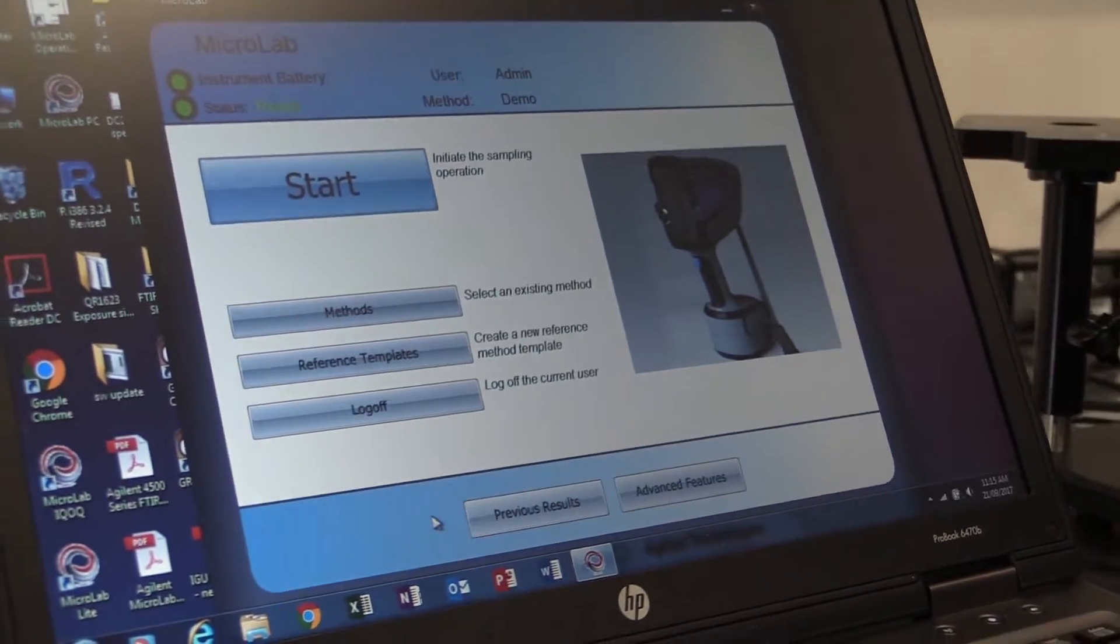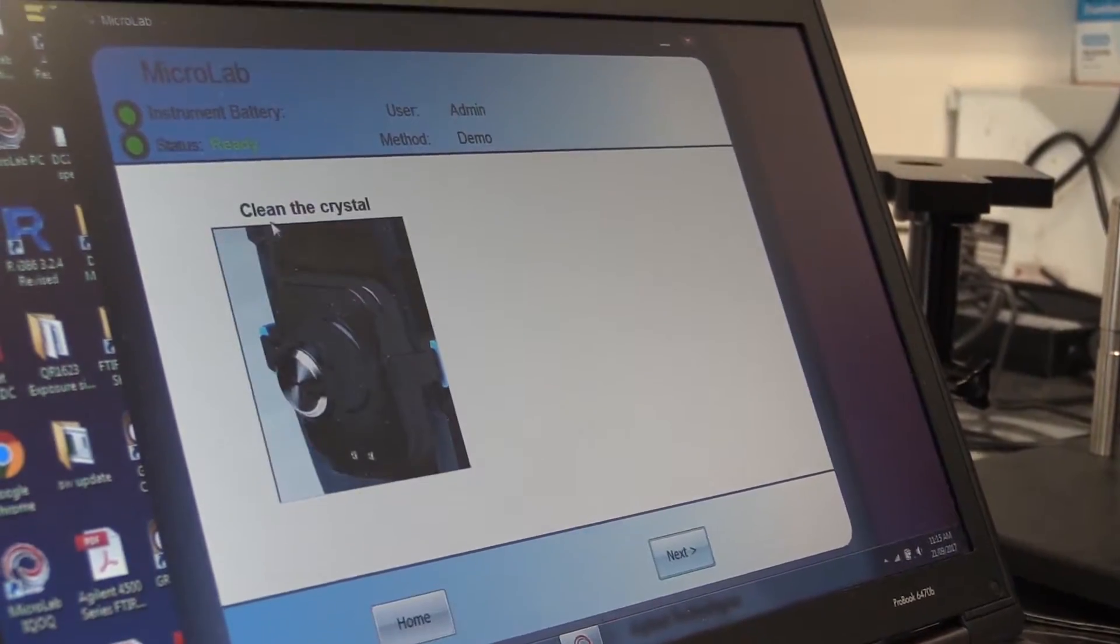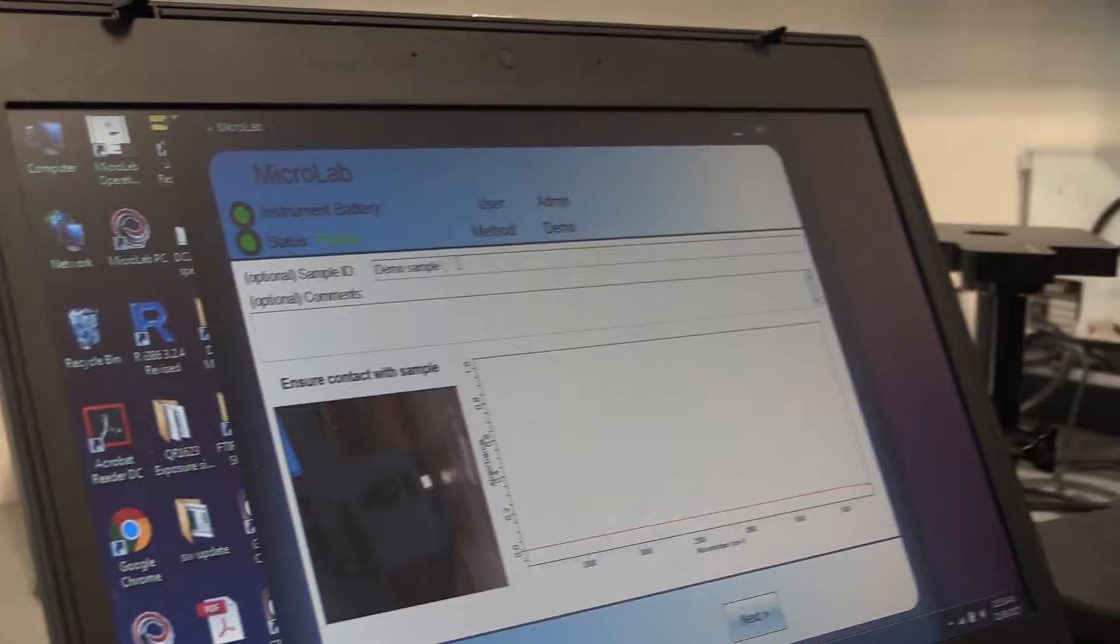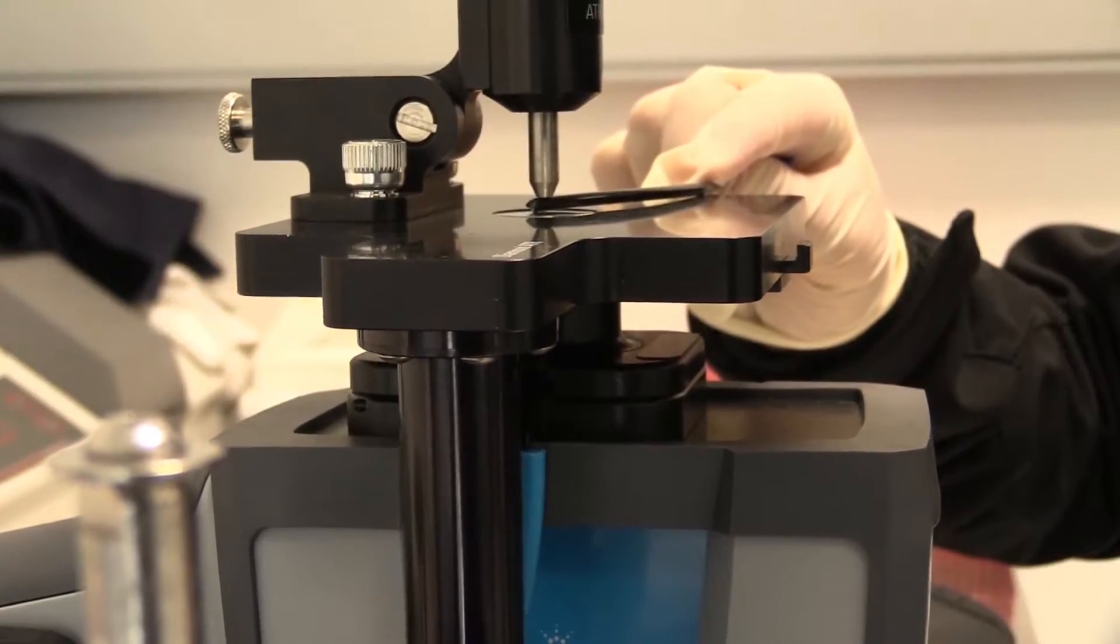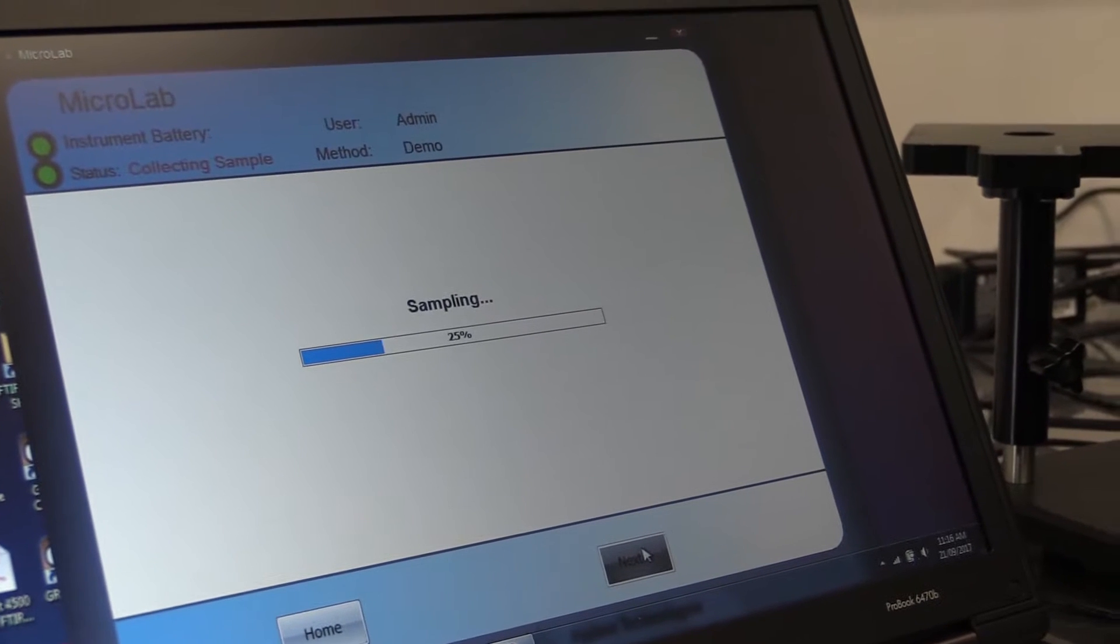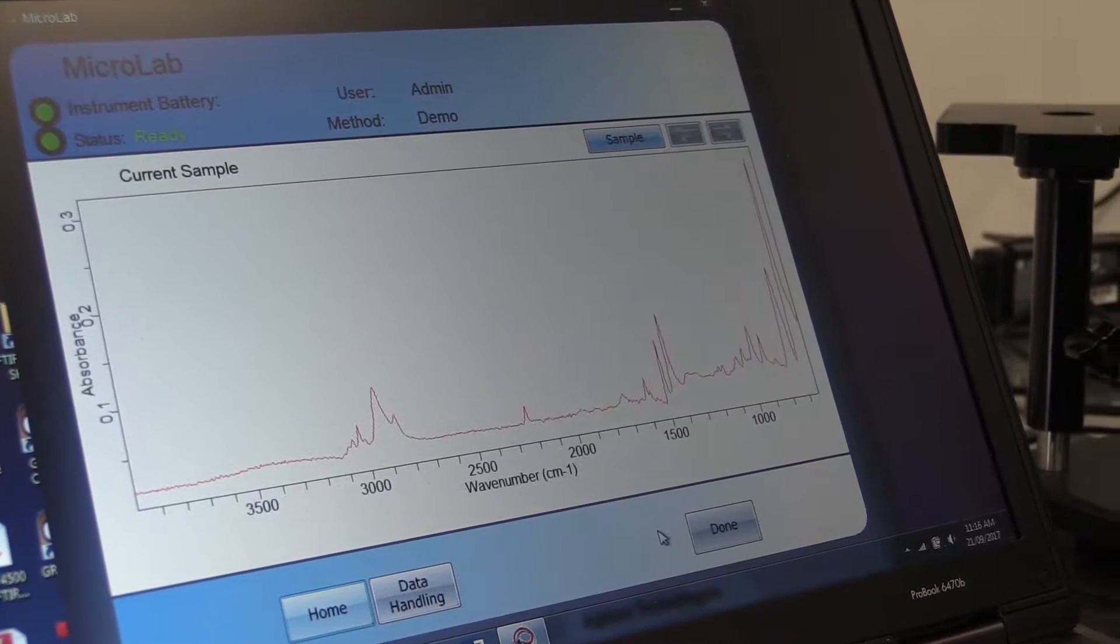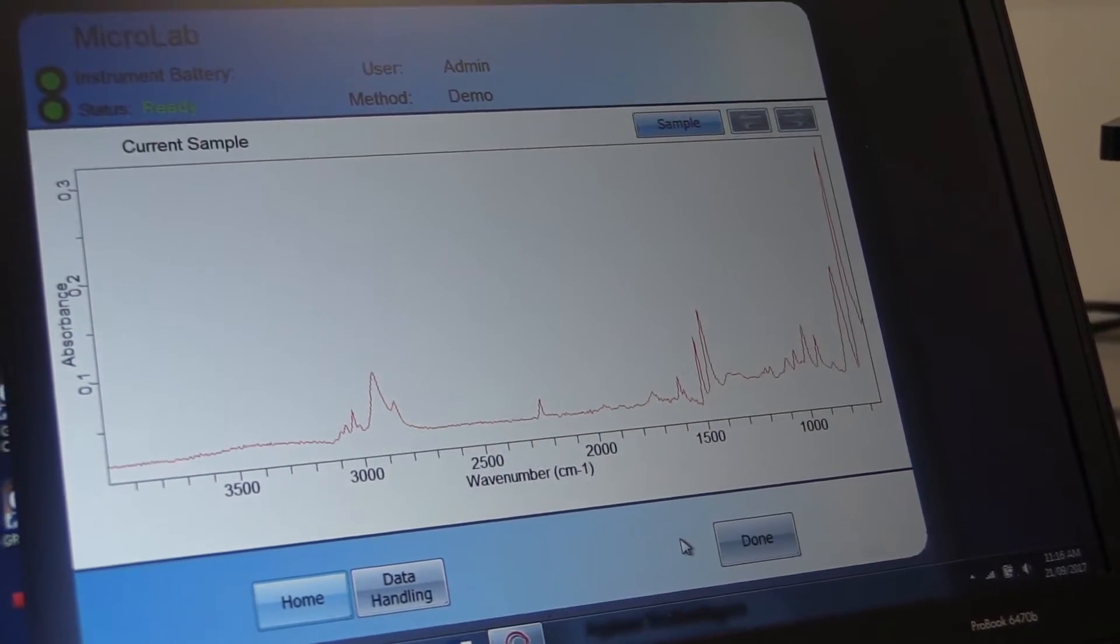Let's see how we go about carrying out FTIR spectroscopy on these products. First product, sample one. Place the sample on the interface and then we can carry out the sampling. And there is our spectrum for the first product.